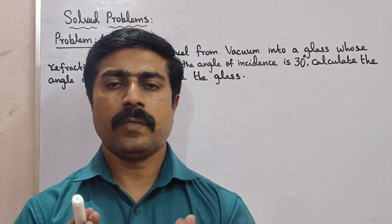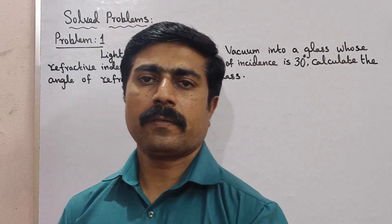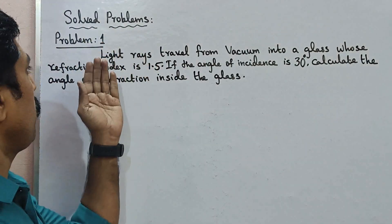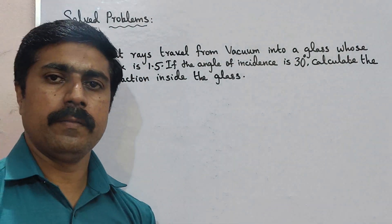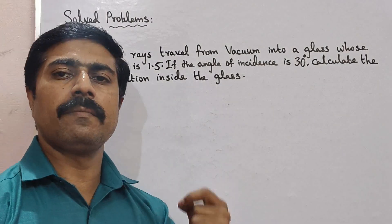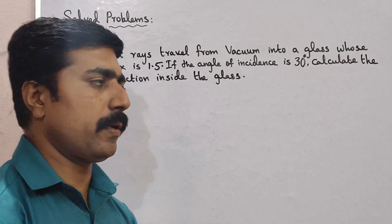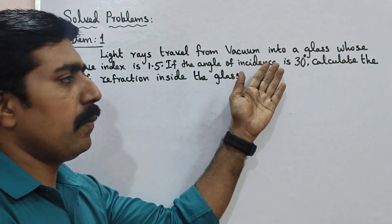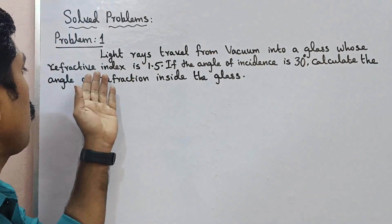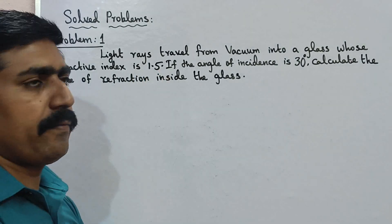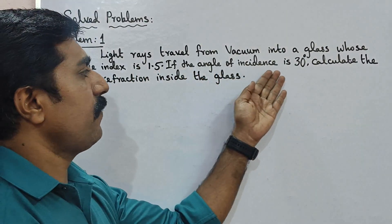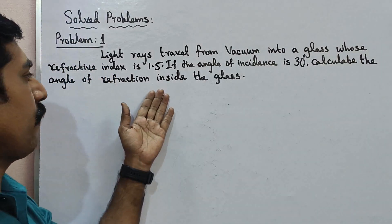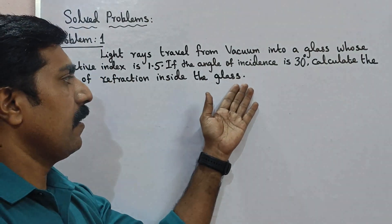Hi students, now we will talk about a very important solved problem — problem number 1. It is a very simple problem. Light travels from vacuum into a glass whose refractive index is 1.5. If the angle of incidence is 30 degrees, calculate the angle of refraction inside the glass.